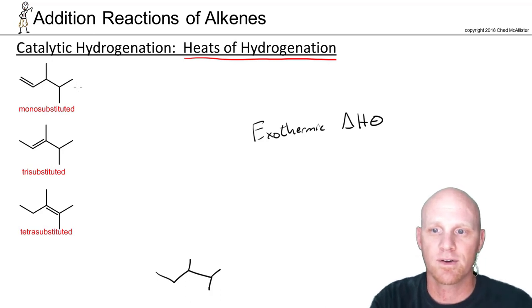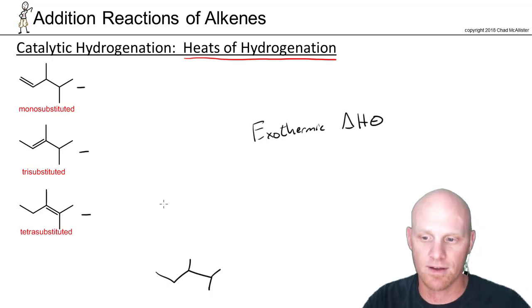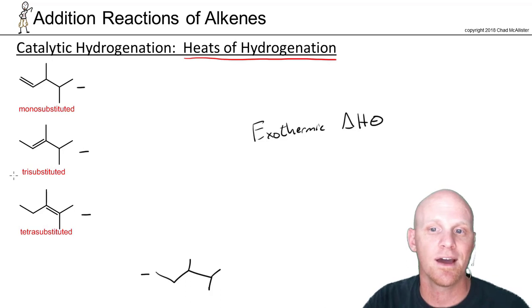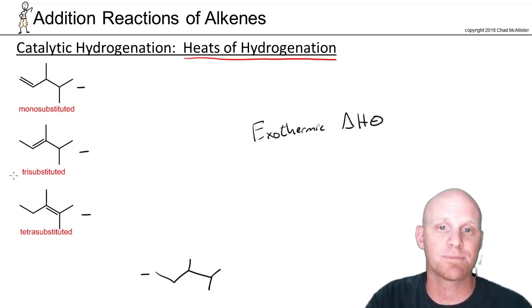If we kind of take a look, I've arranged these alkenes. They're all related to the same carbon backbone and therefore they're all going to give the same alkane product. But I've arranged them all in terms of increasing energy. So you can see the tetra substituted is the most substituted and will be the most stable. It starts out the lowest energy. And the mono substituted being the least substituted will start out as the highest energy. That's that kind of ranking we learned in the last chapter.